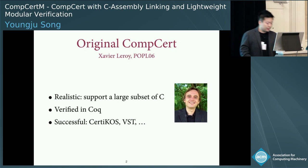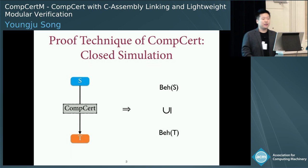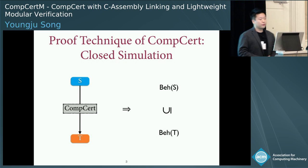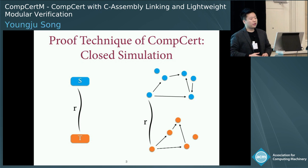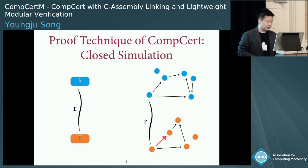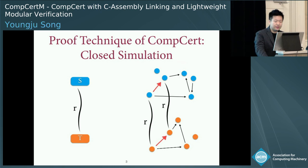So what has actually been verified about CompCert? CompCert verifies the standard notion of compilation correctness called behavioral refinement, which says that the compiled target program behaves as specified by the source. In other words, the behaviors of the target are included in those of the source. To prove this, CompCert uses a technique called closed simulation. It requires first defining a relation R, called a simulation relation, between the program states of the source and target, and then proving that each step of target execution has a matching step in the source with respect to R.